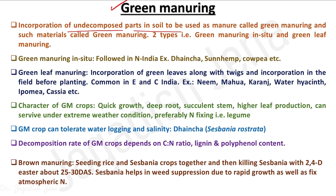The incorporation of undecomposed parts of a plant into the soil to be used as manure is called green manuring. Such a method is called green manuring, and it is basically of two types: green manuring in situ and green leaf manuring.